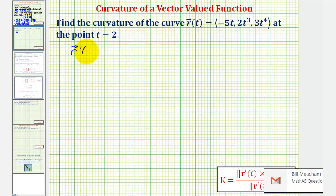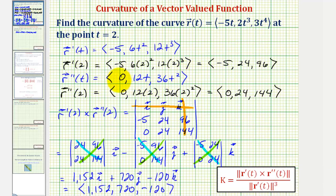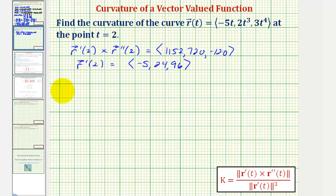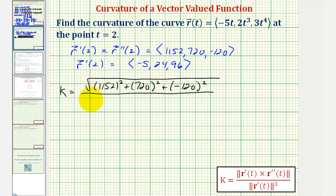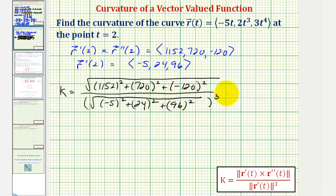So now we know r prime of two cross r double prime of two equals (1152, 720, -120), and r prime of two equals (-5, 24, 96). The curvature k equals the magnitude of the cross product — the square root of 1152 squared plus 720 squared plus negative 120 squared — divided by the magnitude of r prime of two cubed, which is the square root of negative five squared plus 24 squared plus 96 squared, all raised to the third power.